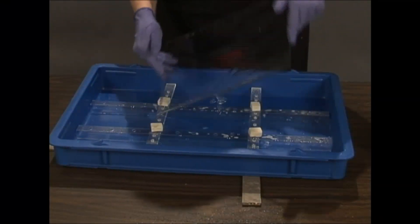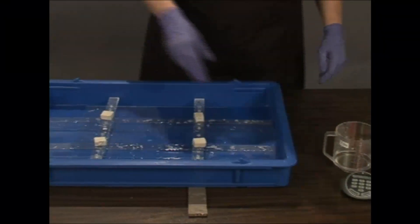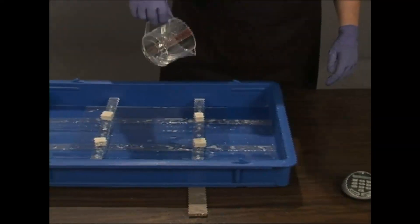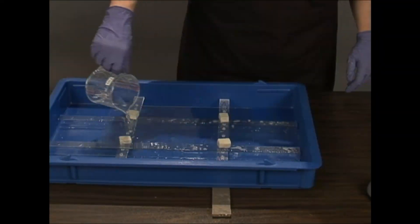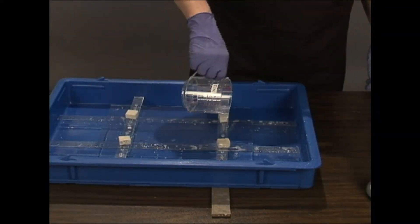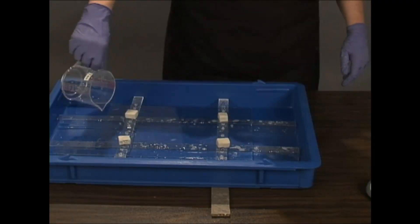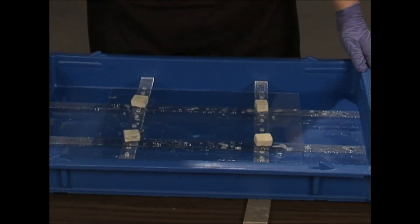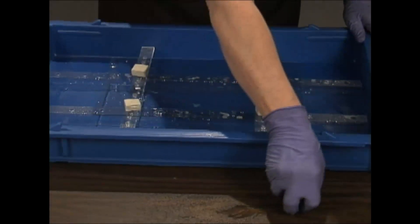You are now ready to tin and silver the glass. Pour on the tin. Let the tin sit on the glass for 30 to 40 seconds.